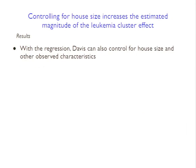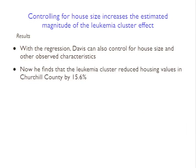He finds that the leukemia cluster now reduces housing values in the cancer county by 15.6%. The intuition is that not only were prices in the cancer county falling, but the houses were also getting larger, so you need to control for that.